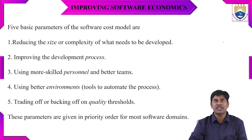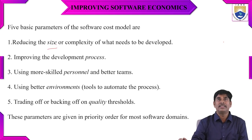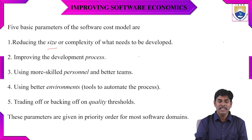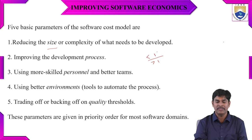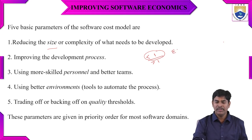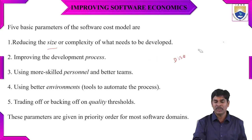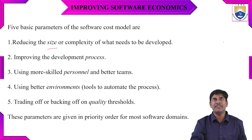The five basic parameters of software cost models are: size, process, personnel, environment, and quality. For size, we need to reduce complexity of what we are developing. For process, we need to verify whether the process exponent is less than or greater than one. If using human-generated coding, we minimize it — the process should be less than one, giving economy of scale. When greater than one, it is diseconomy of scale.